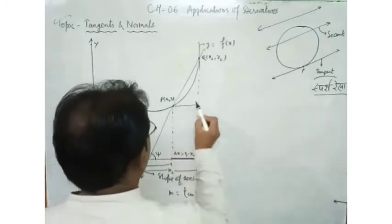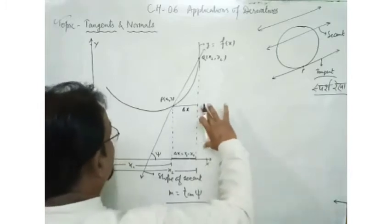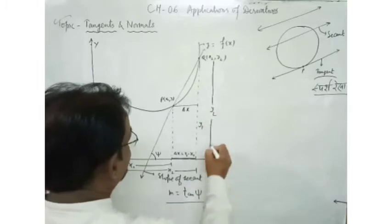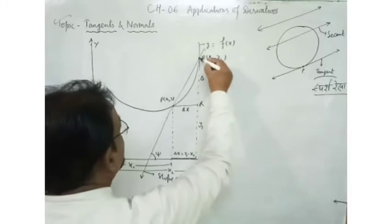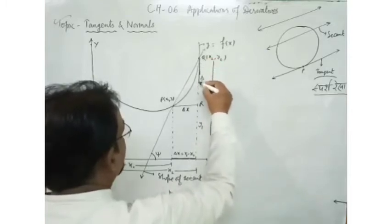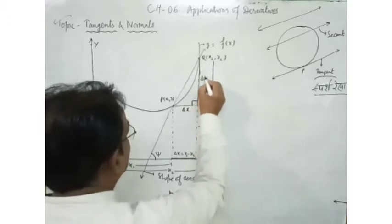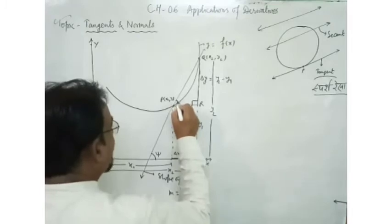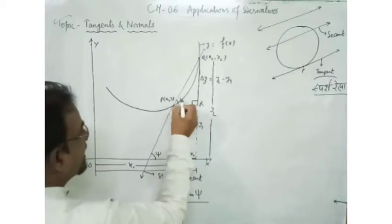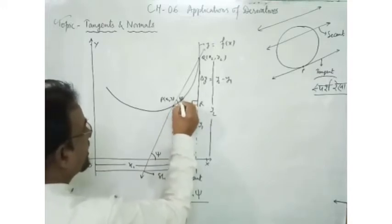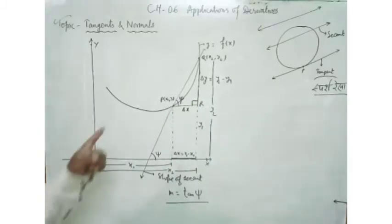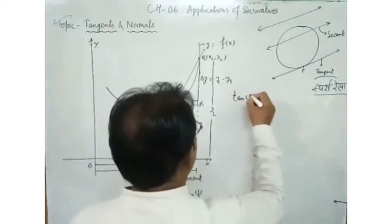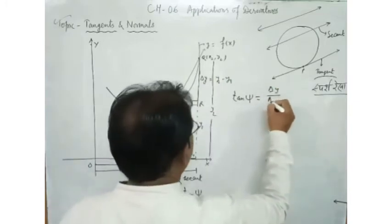अब यहाँ से perpendicular drop कर दीजिए, तो यह भी delta x होगा। Vertical distance में यह y₁ है और यहाँ से यहाँ तक y₂ है, तो यह ऊपर वाला portion — जिसे QR कहेंगे — वो delta y होगा, और delta y will be nothing but y₂ minus y₁. Now imagine that this angle — angle RPQ — should be same as ψ, by the concept of corresponding angles. So in that triangle, tan ψ will be opposite side upon adjacent side, means delta y by delta x.